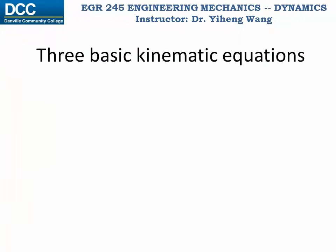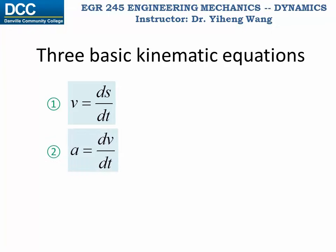Now we have learned the first two basic kinematic equations: velocity v equals ds/dt, and acceleration a equals dv/dt. So if we combine these two and cancel out dt from both equations,